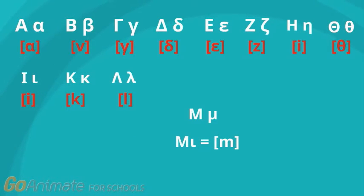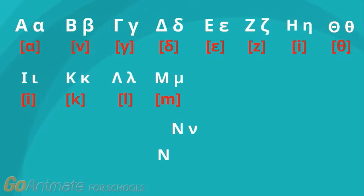We have the letter Mi. Mi is read as M, as in map. Mi, M. Ni is read as N, as in noble. Ni, N.